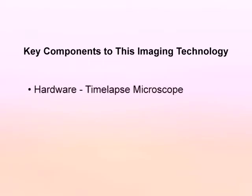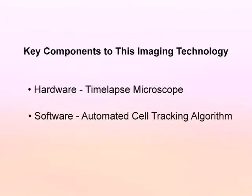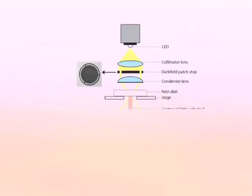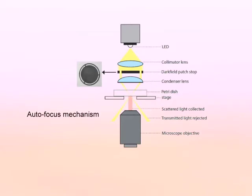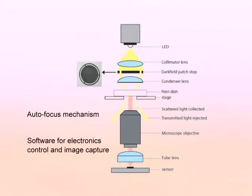There are two main components of this imaging technology: the hardware, or time-lapse microscope, and the software, or automated cell tracking algorithm. The basic components of a time-lapse microscope are LED illumination, the imaging objective, autofocus mechanism, high-resolution camera, and software for electronics control and image capture.